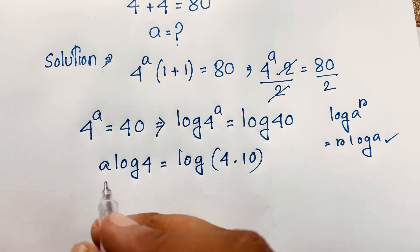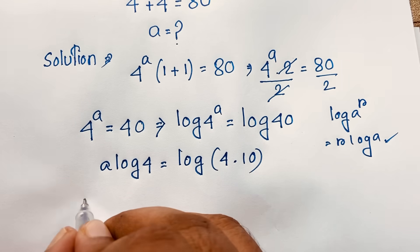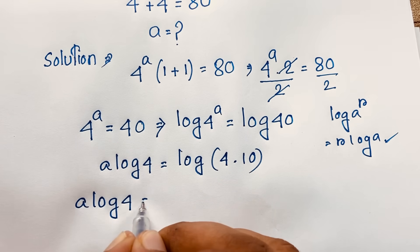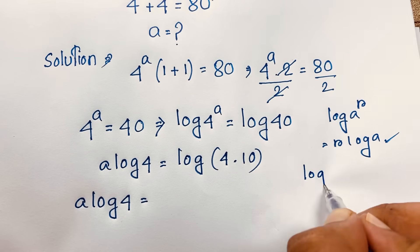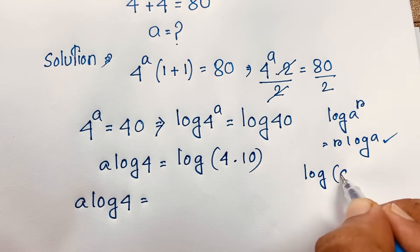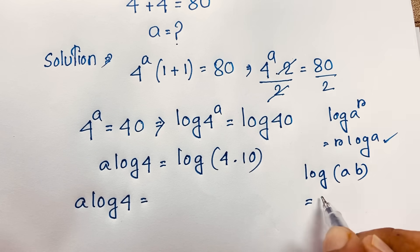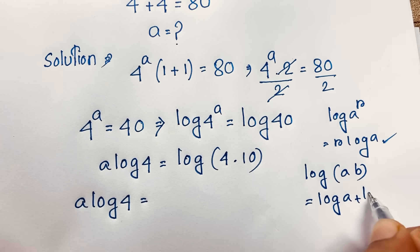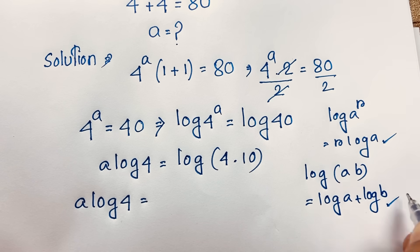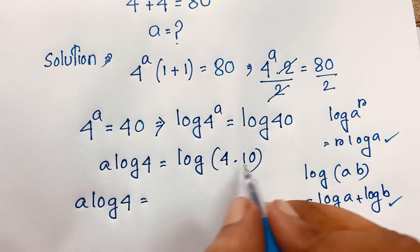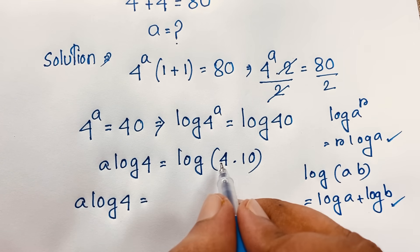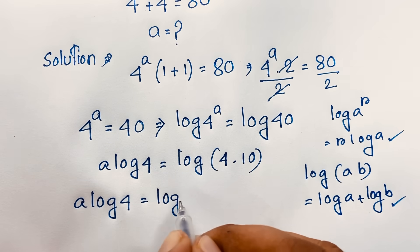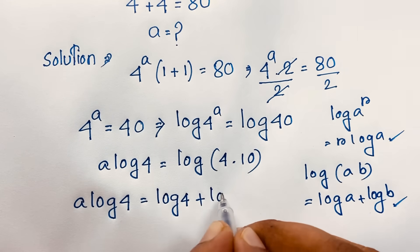Now we have a times log 4 equals log(4 × 10). Using the product rule log(ab) = log a + log b, where a is 4 and b is 10, this becomes a times log 4 equals log 4 plus log 10.